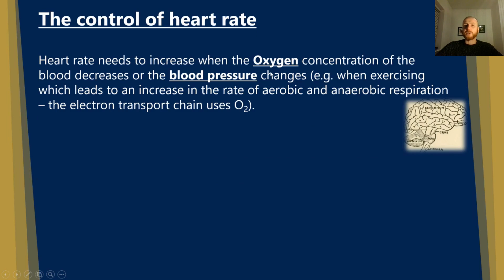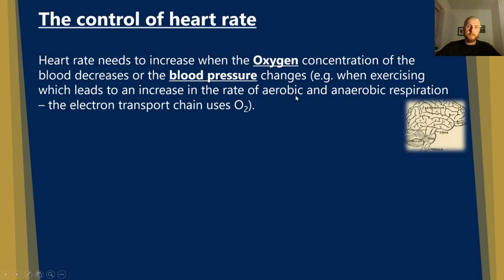Heart rate needs to increase when the oxygen concentration of the blood decreases. Indications of that are that carbon dioxide levels increase, and if CO2 increases, the pH will become more acidic because carbon dioxide in solution forms a weak acid called carbonic acid, lowering the pH. Heart rate also needs to increase when blood pressure drops. For example, when you're exercising, there's an increased rate of aerobic and anaerobic respiration, leading to more need for oxygen, so we need to speed heart rate up to account for that demand.